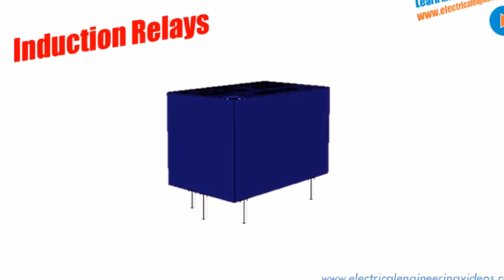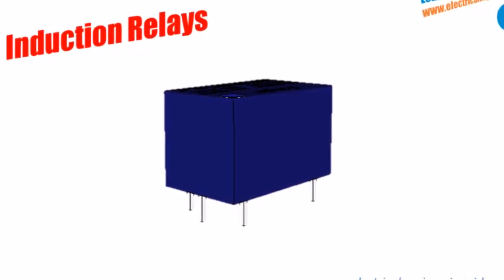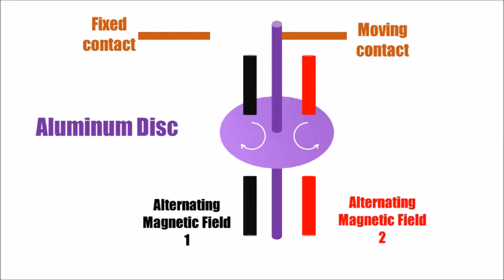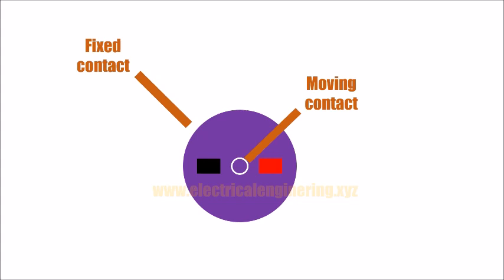An induction relay consists of an aluminum disc, two magnetic fields, a moving contact, and a fixed contact. The figure here displays the schematic diagram of an induction type relay. The moving contact is connected to the shaft that rotates with the disc. Under fault conditions, the interaction of magnetic fields causes the moving contact to rotate, bridging the contacts so the circuit operates.